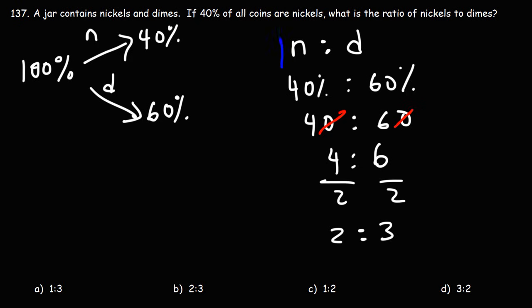So the ratio of nickels to dimes is 2 to 3. So answer choice B is the right answer. Thank you.